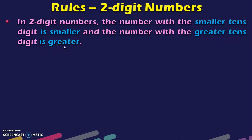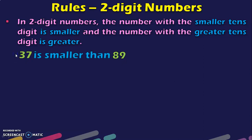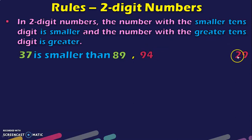Let us see an example. Here I have given 2 two-digit numbers: 37 and 89. As per the rule, look at the 10s place first. We have 3 and 8. Since 3 is lesser than 8, the number with the smaller 10s is smaller, so 37 is smaller than 89. Let us look at another example: 94 and 29. Looking at the 10s place we have 9 and 2. Since 9 is greater than 2, 94 is greater than 29.